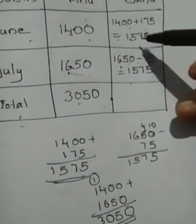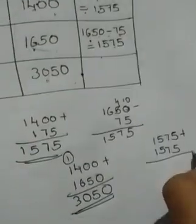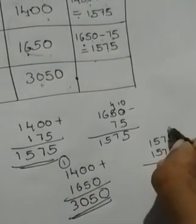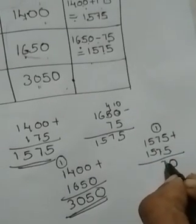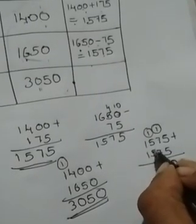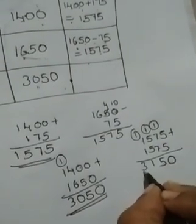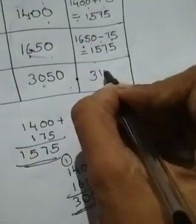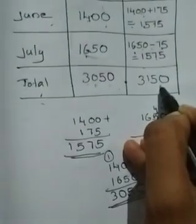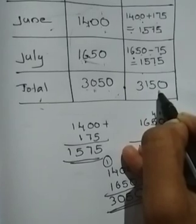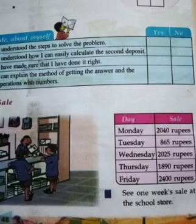Now we want to find the total deposit of Sanu. Add 1,575 plus 1,575: 5 plus 5 is 10 — write 0 carry 1; 7 plus 7 is 14, plus 1 is 15 — write 5 carry 1; 5 plus 5 is 10, plus 1 is 11 — write 1 carry 1; 1 plus 1 is 2, plus 1 is 3. Total deposit of Sanu is 3,150 rupees. Total deposit of Anu is 3,050 and Sanu is 3,150 rupees. Sanu deposited more than Anu.